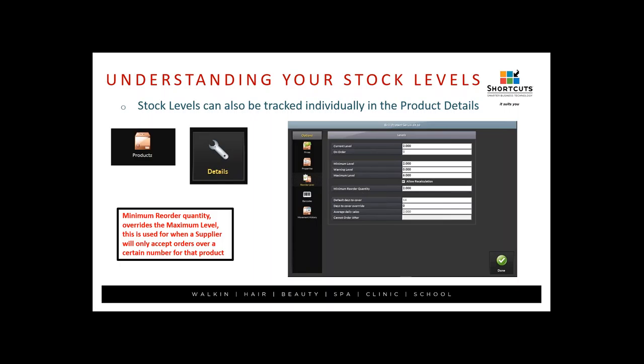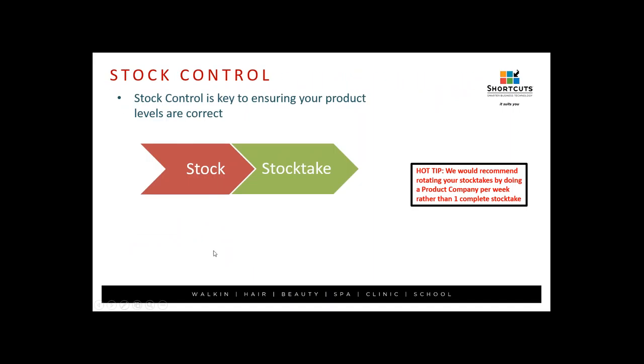There is also a Minimum Reorder Quantity, which overrides the maximum level. This is used when a supplier will only accept orders over a certain number. For example, if we always want a maximum of six on the shelf but the supplier gives a better discount if you order ten at a time, you can set your minimum reorder to ten — so even if you only need four, it will automatically order ten. This can be set individually in the Details against each product.